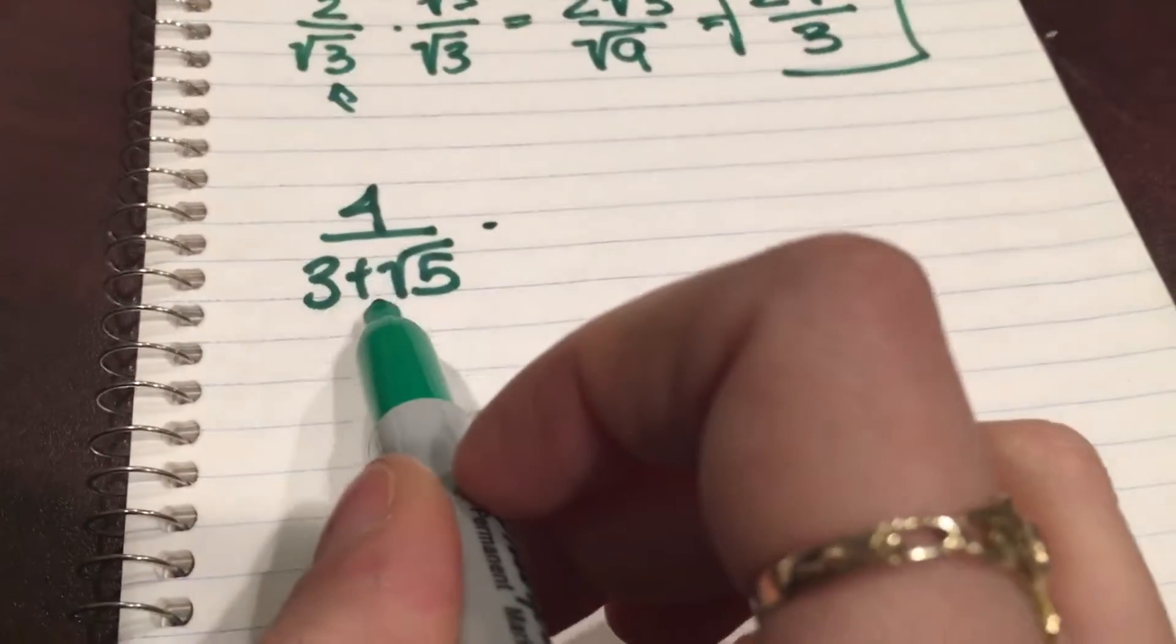So to fix this we have to use the conjugate. Basically, the conjugate is the same exact thing but the sign in the middle changes. So we're gonna multiply the top and bottom by 3 minus square root of 5.